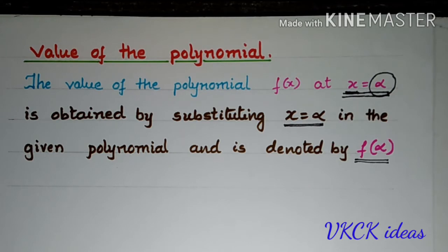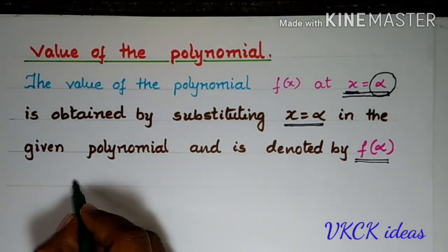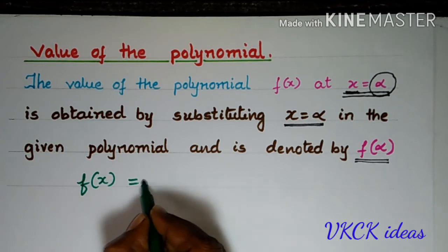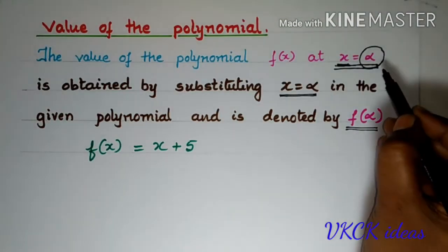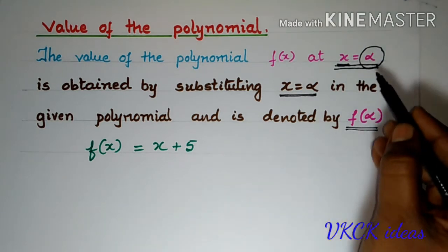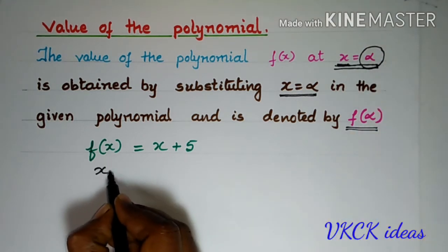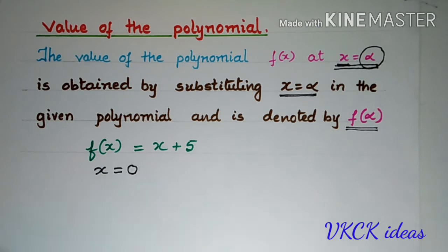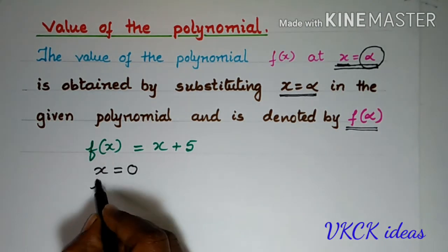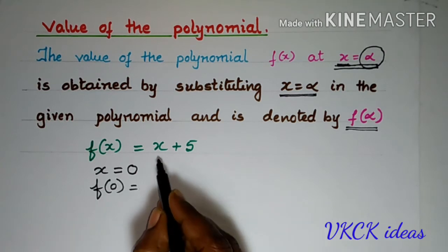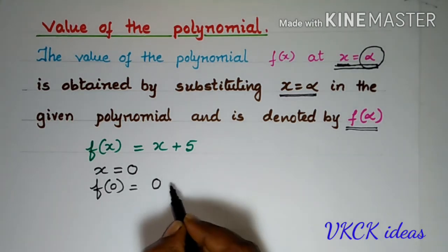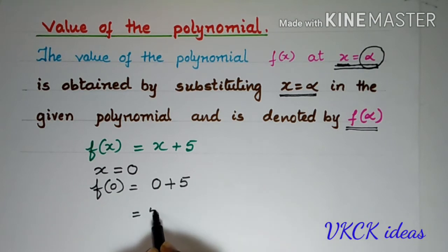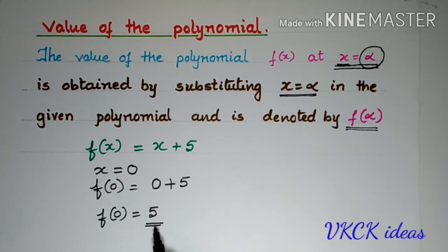Once again, we shall take an example and try to understand. Let me consider a polynomial f(x) = x + 5. Now, let me consider α = 0, that is, in place of x, I shall write 0. So, f(x) will also become f(0). In place of x, I will be writing 0. So, 0 + 5 — you know it is only 5. So, f(0) = 5, which is the value of the polynomial when we gave 0 for x.